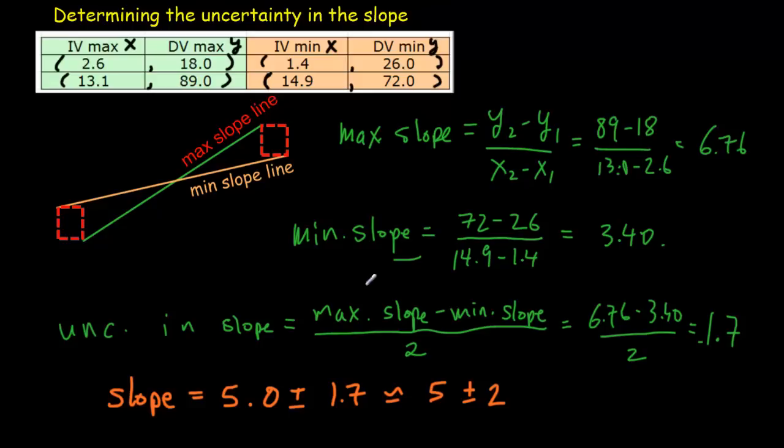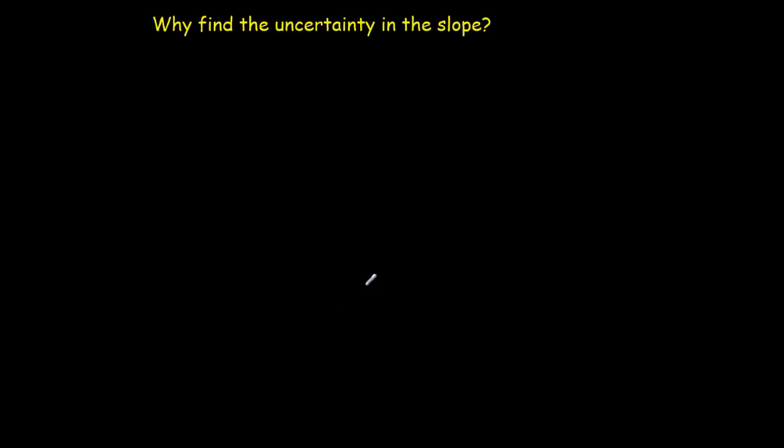Or, more accurately, 1.7 and 6.8. What's the good of finding the uncertainty in the slope? Typically, your slope is related to some physical quantity. So let's say that in our experiment, the slope is supposed to equal some physical quantity that had a true value and accepted value of 4.61.